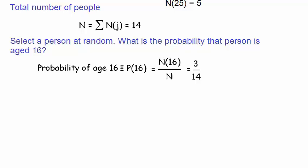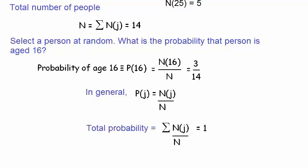In general, we can write the probability of selecting a person with a certain age j as n as a function of j on the total number of people n. Because the total probability must equal 1, that means a sum of all n as a function of j over total n must also equal 1.